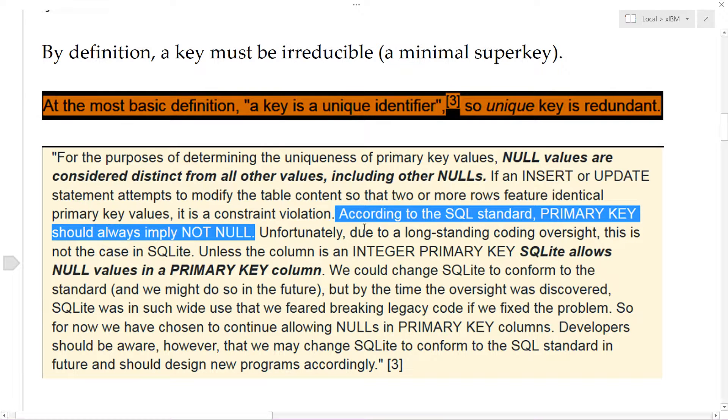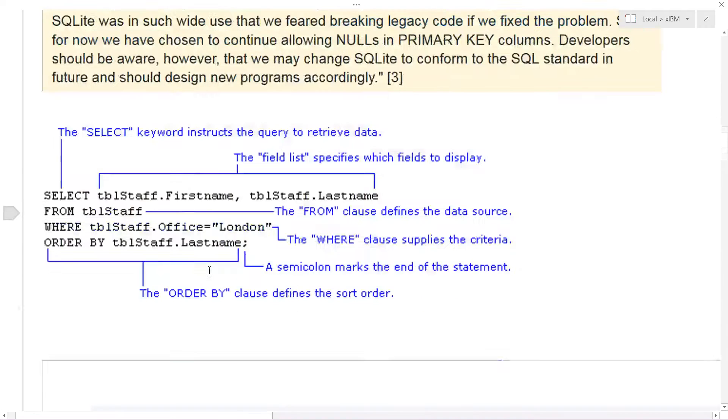For the purposes of determining the uniqueness of primary key values, null values are considered distinct from all other values, including other nulls. If an insert or an update statement attempts to modify the table content so that two or more rows feature identical primary keys, it is a constraint violation. According to the SQL standard, primary key should always imply not null. And we'll talk more about nulls later.